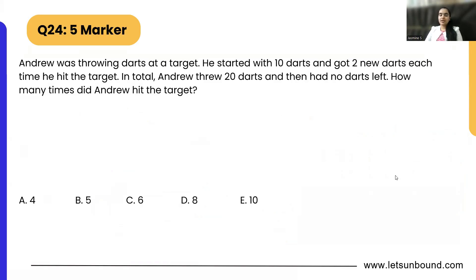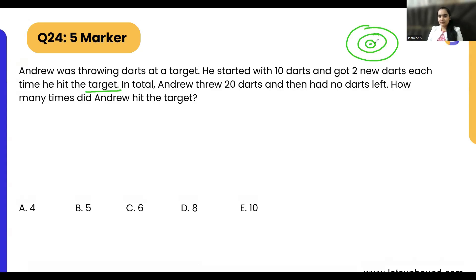Question 24: Andrew was throwing darts at a target. He started with 10 darts and got two new darts each time he hit the target. In total, Andrew threw 20 darts and then had no darts left. How many times did Andrew hit the target?